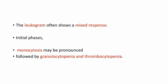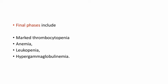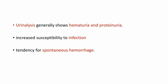In contrast to enzootic hematuria, this condition is caused by a high dose of toxin over a short duration of time. The final phases include marked thrombocytopenia, anemia, leukopenia, and hypergammaglobulinemia. Urinalysis generally shows hematuria and proteinuria, increased susceptibility to infection, and a tendency for spontaneous hemorrhage.